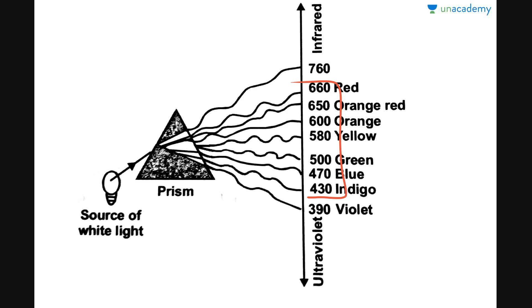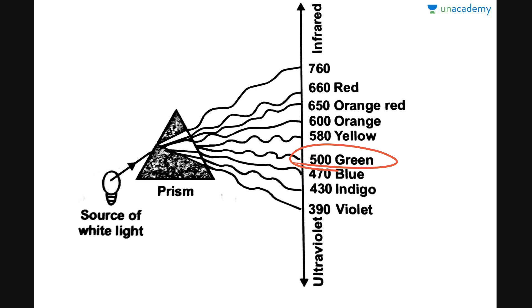How are these wavelengths of light utilized by the plant? Taking the example of chlorophyll A — what chlorophyll pigment does is that it mainly absorbs the blue region at around 470 nm and the red region at around 660 nm, and it reflects back the green wavelength of about 500 nm. This is the reason that the color of leaves and plants is usually green, since it absorbs the red and blue wavelengths and reflects back the green region of the visible spectrum.